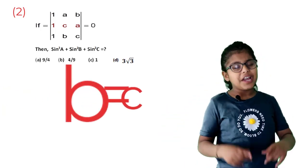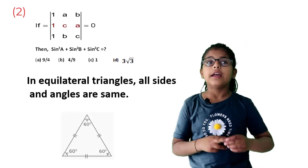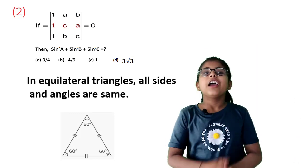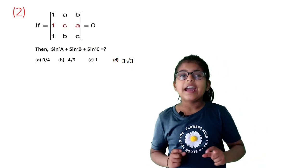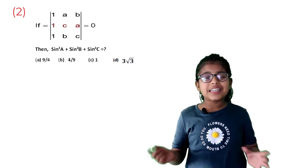As we know, in an equilateral triangle, all sides and angles are same. That is, each angle is 60 degrees. Here, I will put the value of angle A, angle B, and angle C as 60 degrees.